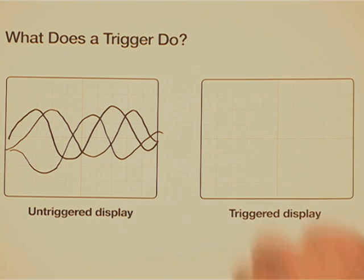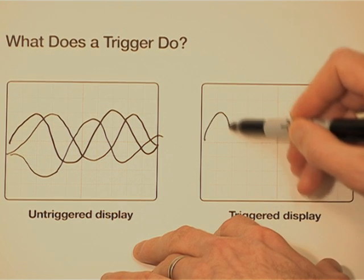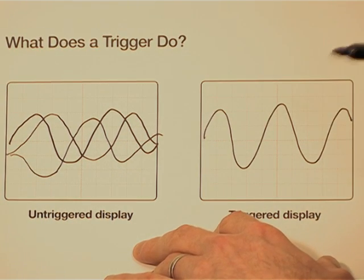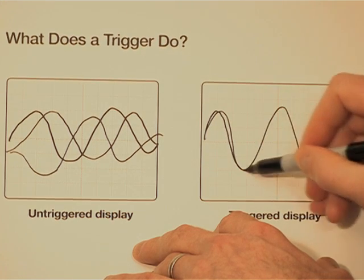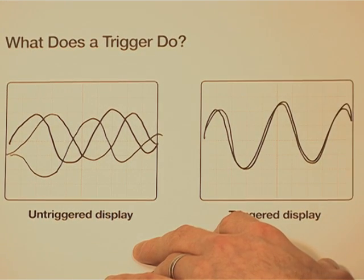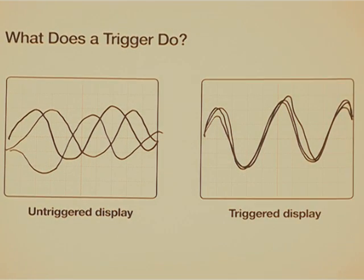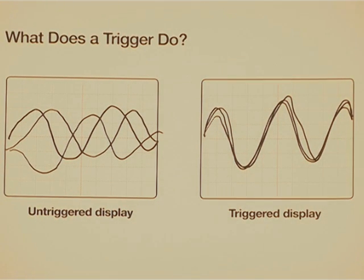So instead, what you'd like is to be able to start the waveform at some particular point and then the next time that it's time to update the display, you'd like it to update at exactly the same point on the signal so you get a much more coherent display. Yeah, that's great. Can you see that on the scope here? Definitely.